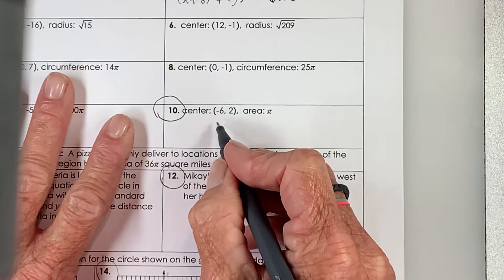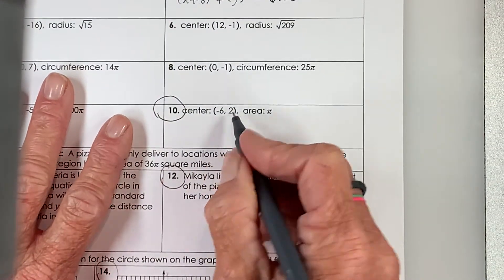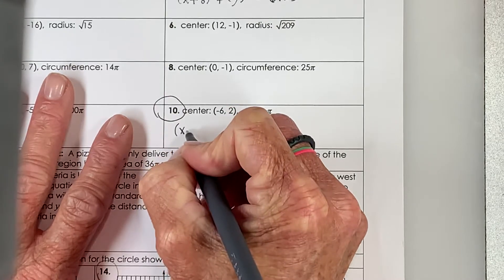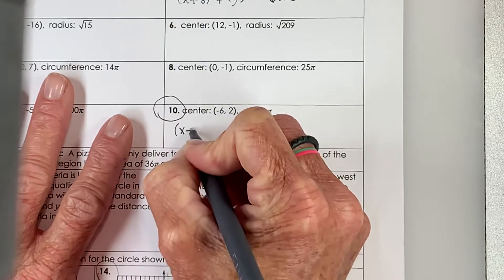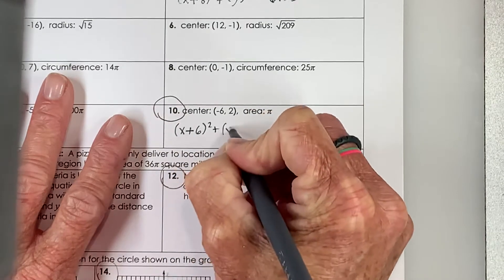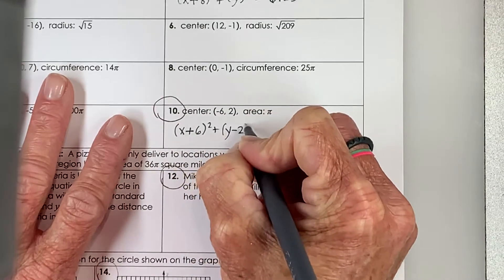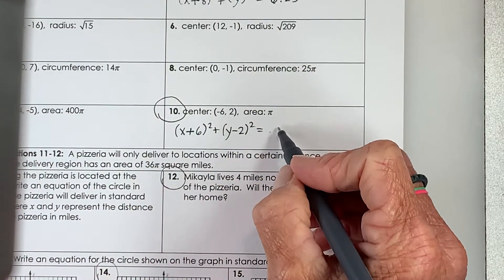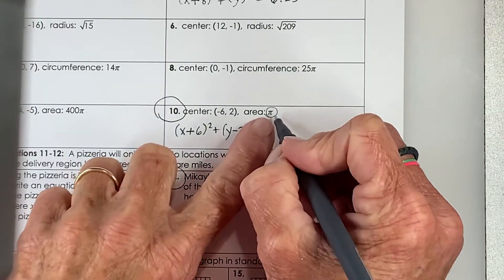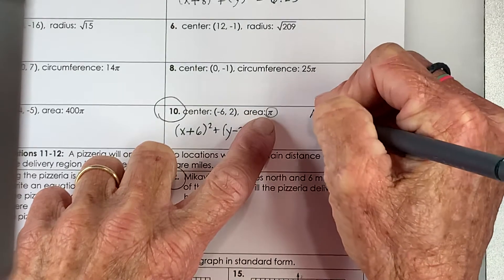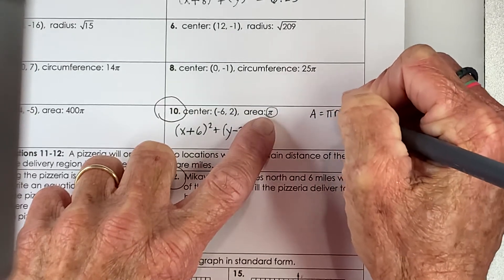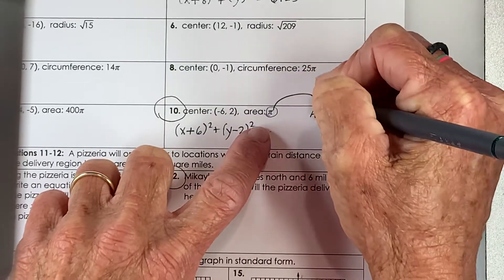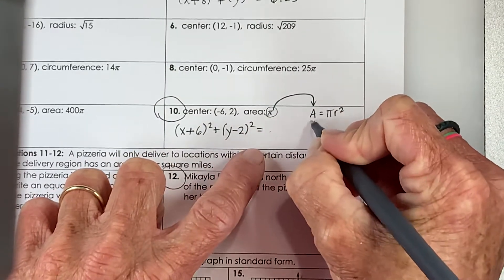Down here, our center is negative 6, positive 2. So x minus a negative 6 would become plus 6, quantity squared. Y minus the y-coordinate squared is equal to the radius squared. I don't have my radius. I have my area. So remember, area is equal to pi r squared.